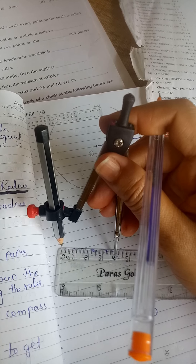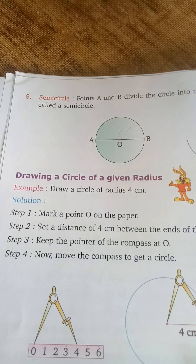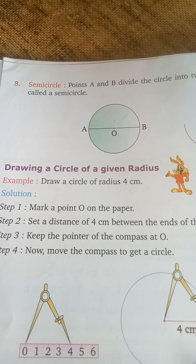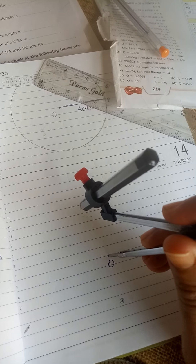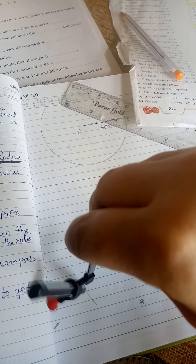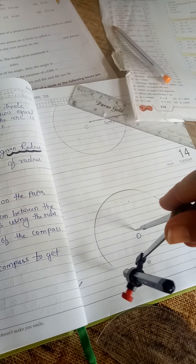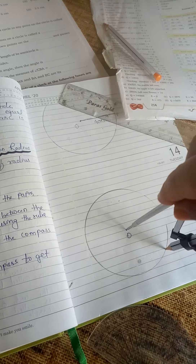The third step: keep the pointer of the compass at point O. We will place that pointer on the point O. Then in the fourth step, we construct or plot the circle like this.